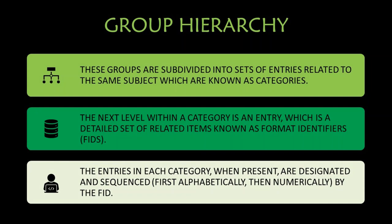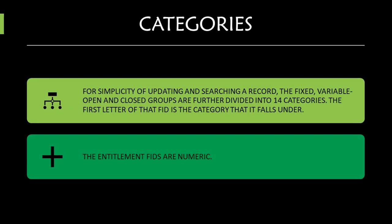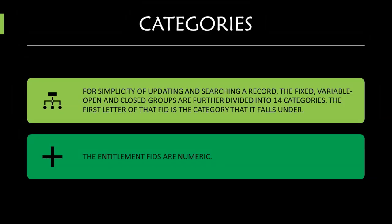Let's talk about the group hierarchy. These groups are subdivided into sets of entries related to the same subjects, which are known as categories. The next level within a category is an entry — a detailed set of relative items known as format identifiers, or FIDs. The entries in each category are designated and sequenced first alphabetically, then numerically, by the FID. For simplicity, the fixed, variable open, and closed groups are further divided into 14 categories. The first letter of a FID is the category it falls under, except for entitlement FIDs — entitlements are numeric. Today we are training on entitlement.